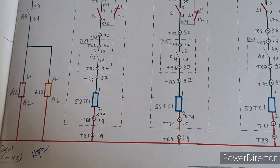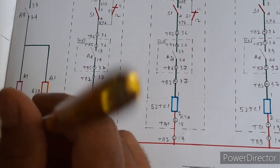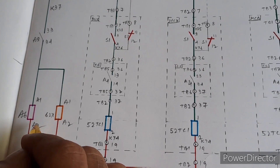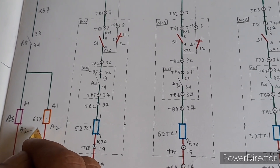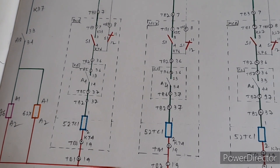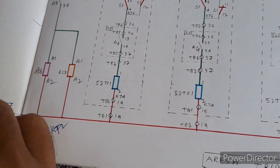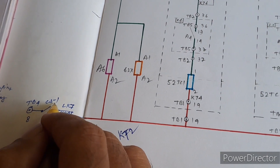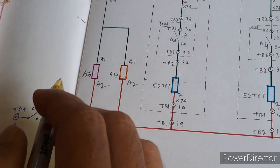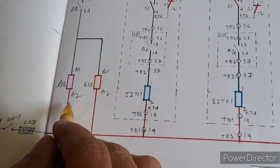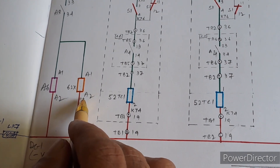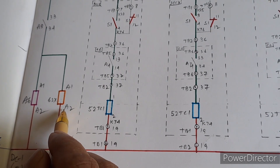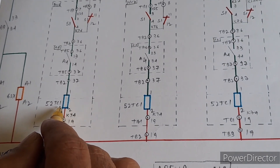The A6 contactor and 62X contactor are used for TRIP1 and pole discrepancy multiplier respectively. DC negative source from CB4 terminal number 8 goes to DC control selector switch CS1 and through link 7 to the A6 contactor terminal A2 and 62X contactor (pole discrepancy multiplier) terminal A2.